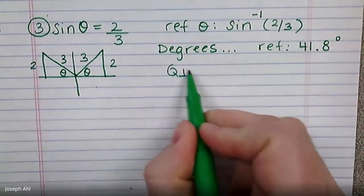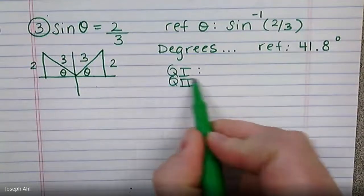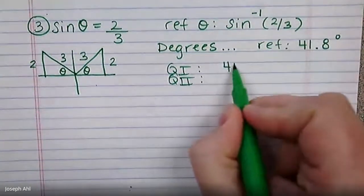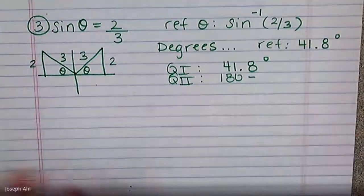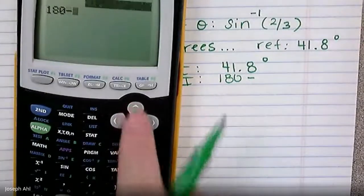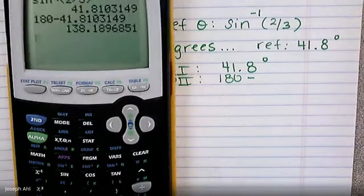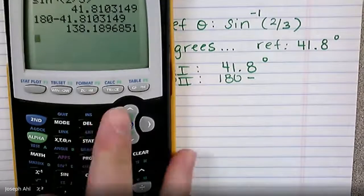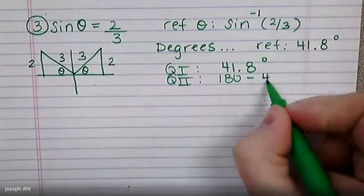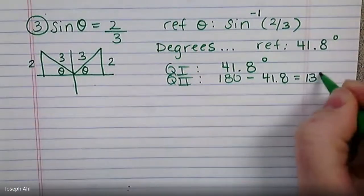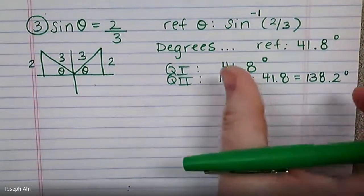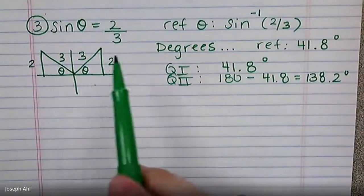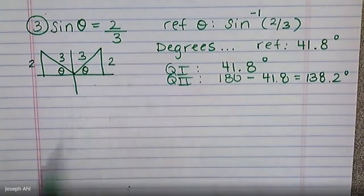So I have to take that and get a quadrant one and a quadrant two answer. Well, quadrant one, it's nice because that's just 41.8. But in quadrant two, we know we're going to do 180 minus that. So 180 minus that last answer is 138.2. So it's just the calculator doing a little bit more of the work for us because it's a non-special angle.